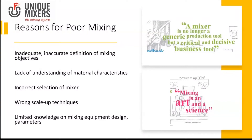What are the reasons for poor mixing? Well, inadequate and inaccurate definition of mixing objectives. We need to clearly define what the objectives of mixing are in the process — whether it is to get a uniform color, a uniform composition, or a uniform texture, or to modify any of those parameters.